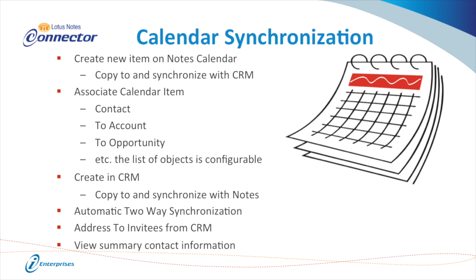Now on to the calendar synchronization. The Lotus Notes Connector lets you create new calendar items right on your Notes calendar and then it copies and synchronizes those with your CRM. It also lets you associate the calendar item to a contact, account, opportunity, or even a custom object. If you create calendar items or events in the CRM itself, it will pass those to your Notes calendar — it does a two-way synchronization. Both your Notes calendar and your CRM calendar are always up to date regardless of which one you enter the information in. You can address invitees from the CRM within the Notes calendar and see a summary of contact information and other details.